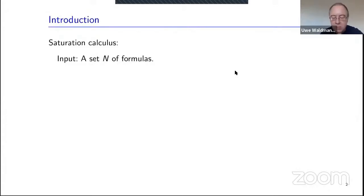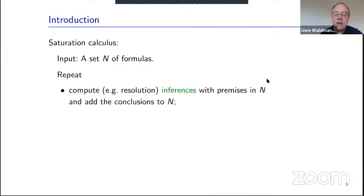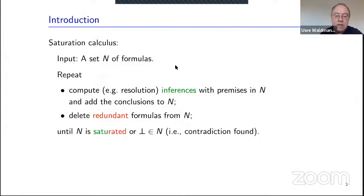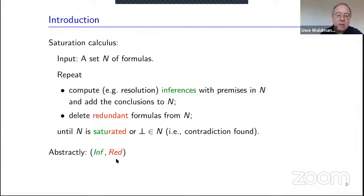Typical automatic provers for first-order logic implement saturation calculi. Saturation calculi take as input a set N of formulas, compute resolution inferences with premises in that set and add conclusions to it, or delete redundant formulas, until they either reach a saturated set or derive a contradiction. Abstractly, this is described by a tuple consisting of an inference system and a redundancy criterion: the inference system tells us what to compute, and the redundancy criterion tells us what we may delete.